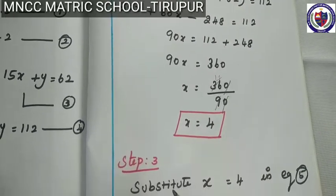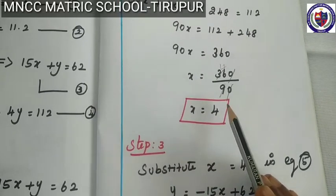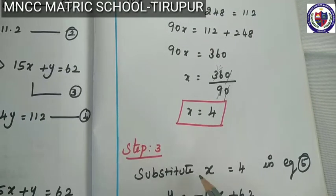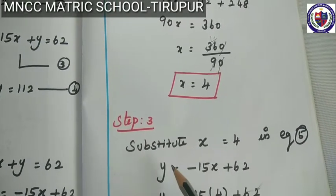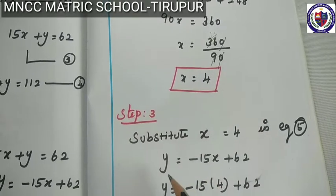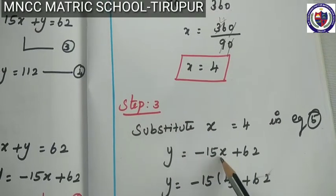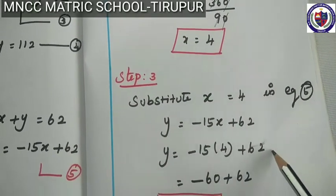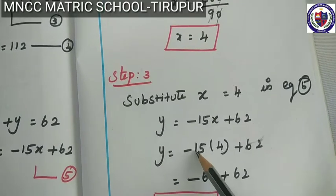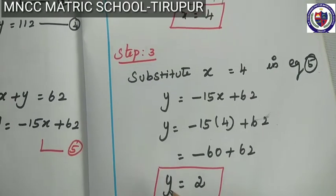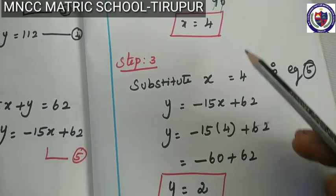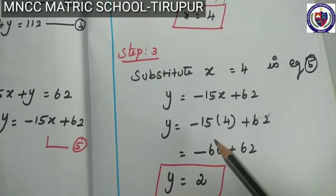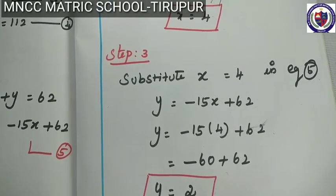Step number 3: substitute the value of the variable obtained in step 2 into the result of step 1 to get the value of the remaining unknown variable. So substitute x is equal to 4 in equation 5: y is equal to minus 15x plus 62. So y is equal to minus 15 into 4 plus 62, which is minus 60 plus 62. The value of y is equal to 2. We found the two variables: x is equal to 4 and y is equal to 2. Thank you students.